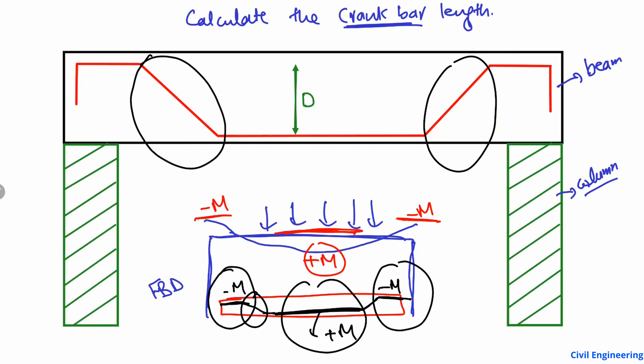There are no high bending stresses at the middle portion of the beam near the supports, so we bend the bar at those portions in order to make the bar available for positive bending moment in the mid-span and negative bending moment at the supports. I hope you understand this concept of providing the crank bar.